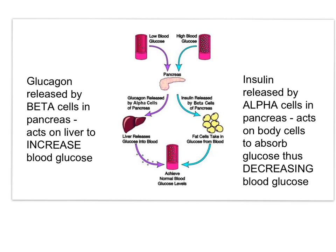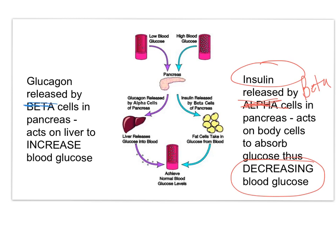Here are the basics of how these two hormones work. Insulin is released by beta cells in the pancreas, and they act on body cells to absorb glucose, thus decreasing the blood glucose level. Glucagon is released by alpha cells in the pancreas, and it mostly acts on the liver, stimulating it to take glycogen — the starch — and break it down into glucose, which increases the blood glucose level.